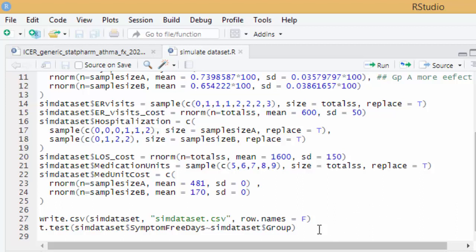And here at the end a t-test is performed to compare the significance of the difference between the symptom-free days between group A and B. And this line here writes the simulated dataset as a CSV file. So let's try it.